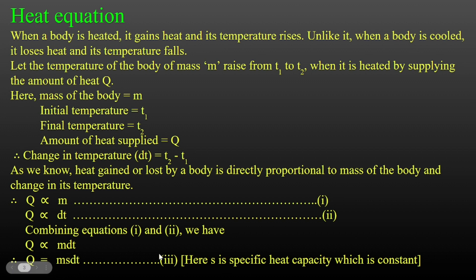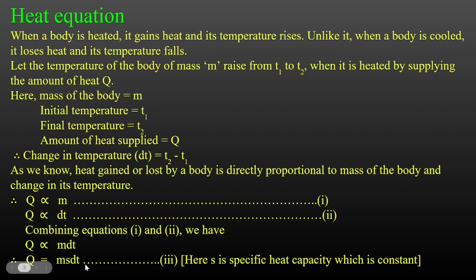This is very important for the exam — the heat equation Q = msdt. The proportionality sign is removed by introducing the constant, and that constant is the specific heat capacity.